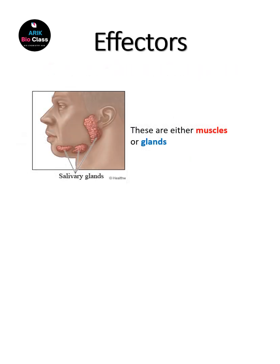So, then we come towards the effector. As soon as the signals reach the brain, processing will take place. The brain will be called as the coordinator — brain and the spinal cord. These two will be called as the coordinators. They will send back the signals to the effectors. Now, effectors are the organs which are going to act against that signal. Either muscles or the glands will act as the effectors.